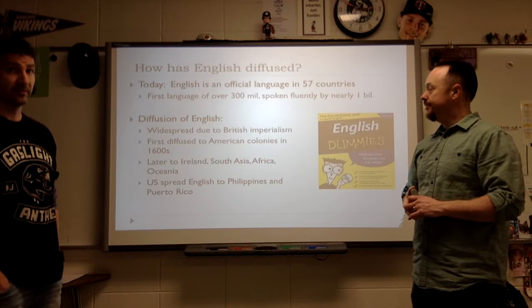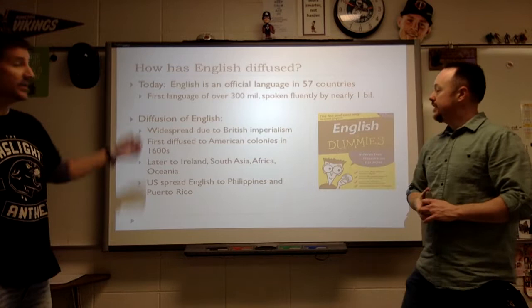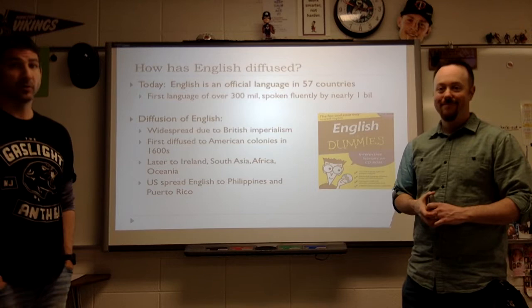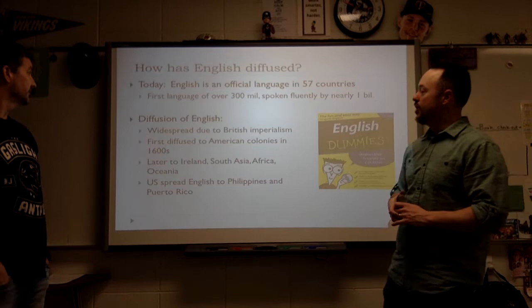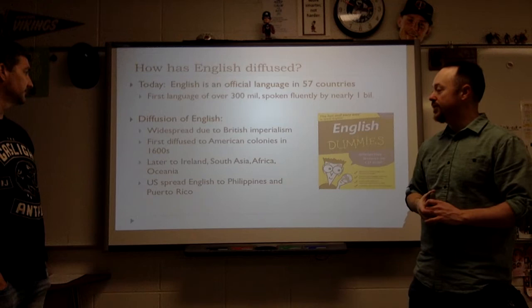This is relocation diffusion. Big ticket items of culture — language, religion, ethnicity — are all going to be relocation diffusion, although you could argue there's some hierarchical diffusion here too, because the British imposed their will on colonists and made them speak their language. So it spread through British imperialism: the American colonies, then later Ireland, South Asia, Africa, and Oceania.